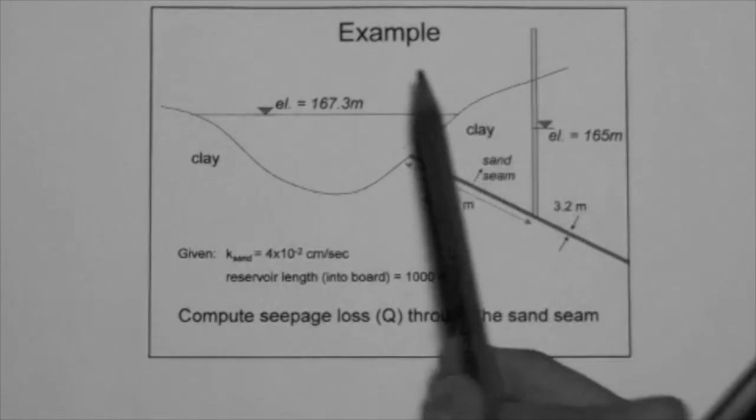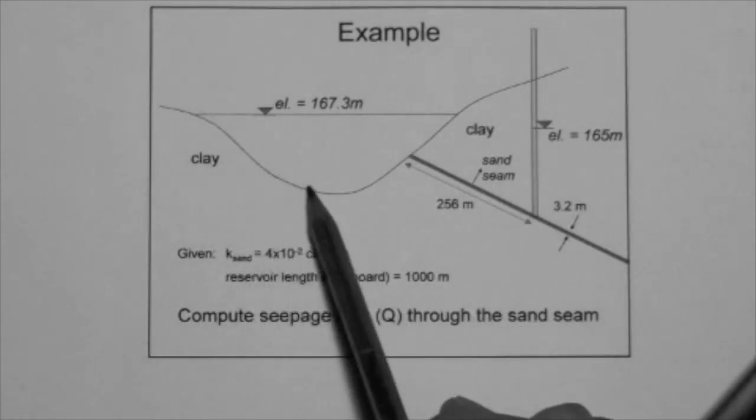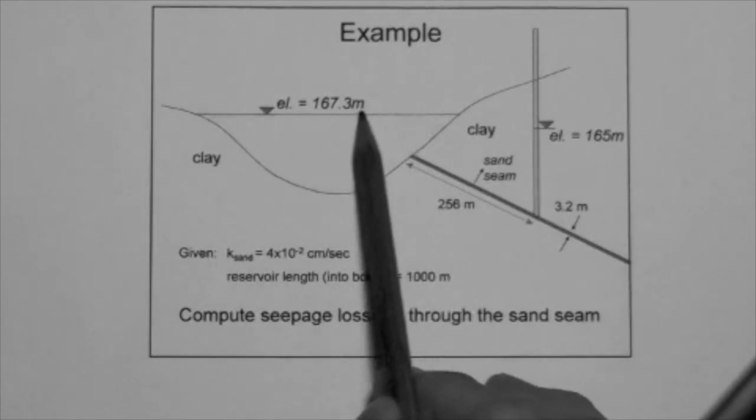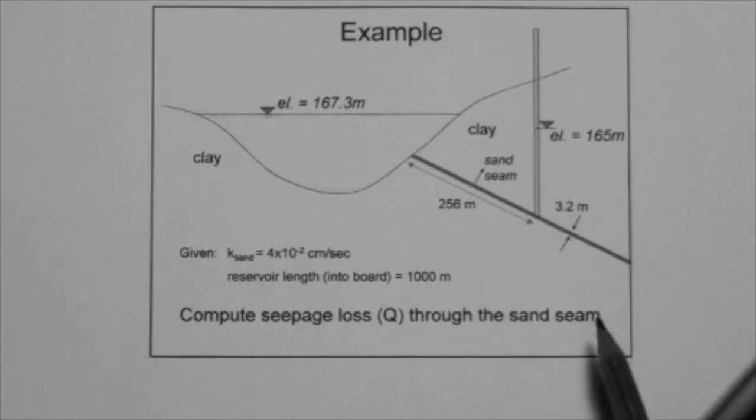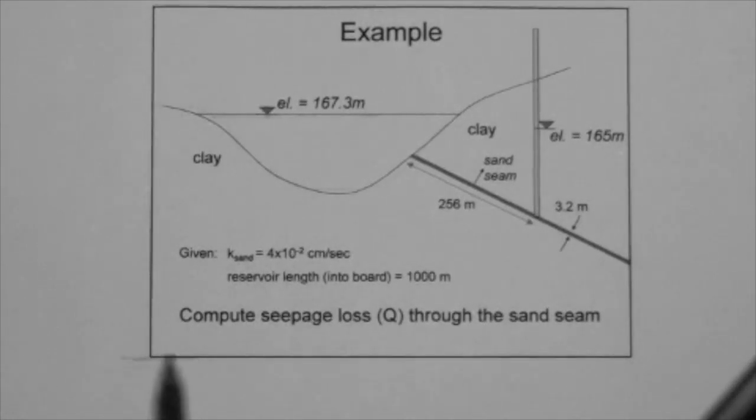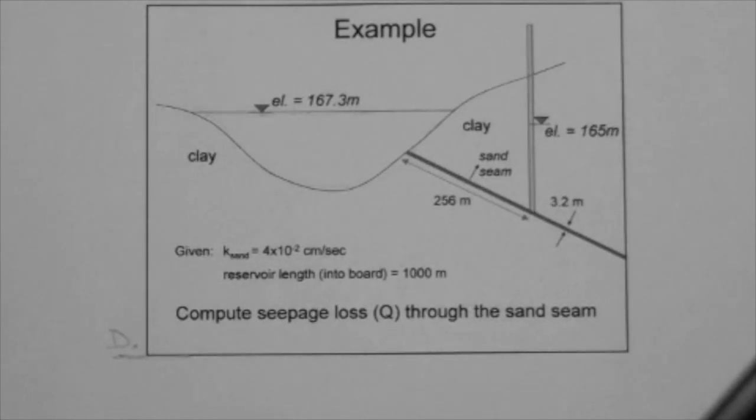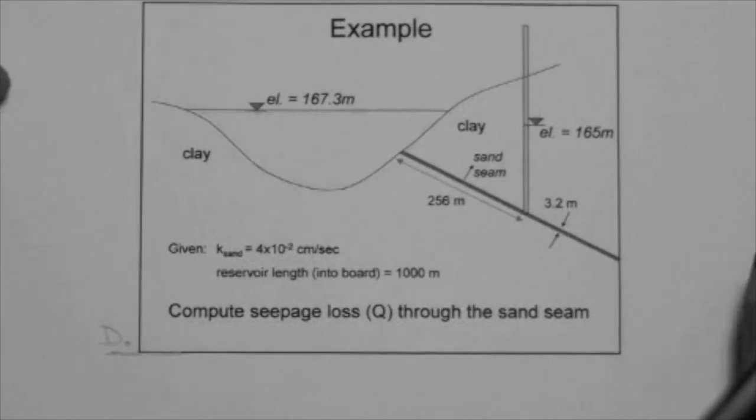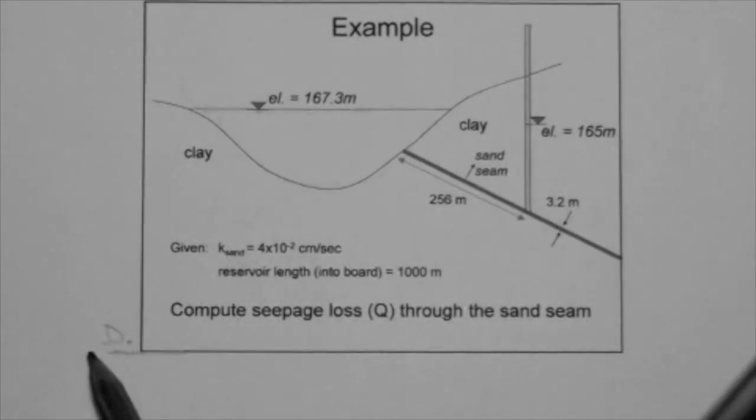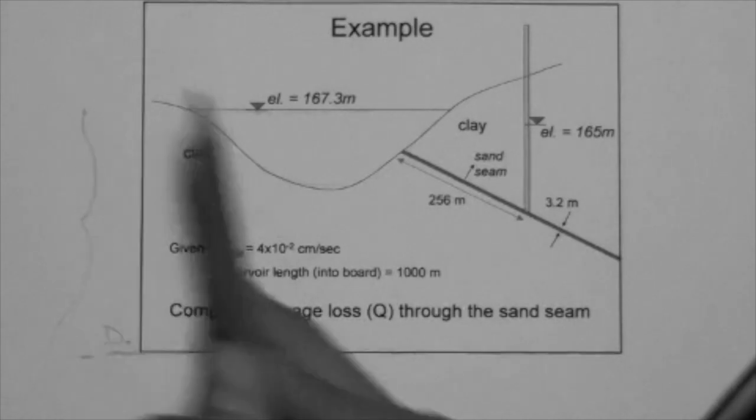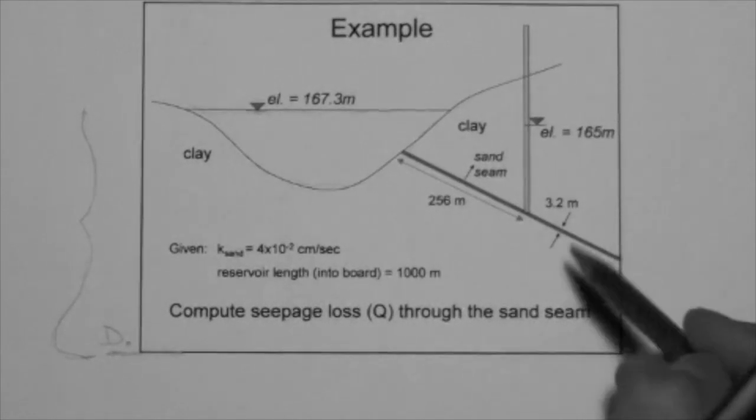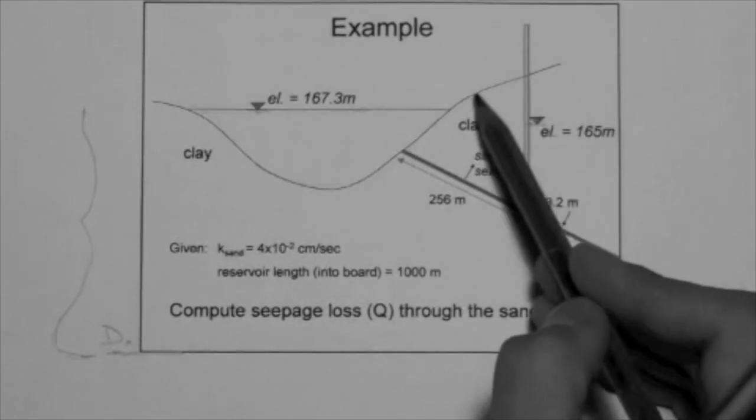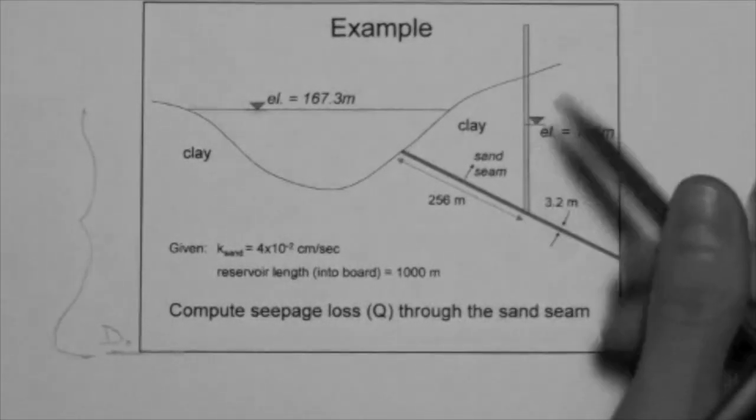So look, there's a lake, and the elevation of the water table is 167.3 meters. You could say that this is the datum here, just for reference, so we can have some kind of reference point. That means that the distance from the datum to the water table is 167.3 meters. Now, this is a profile, a cross section. Here's the tree.